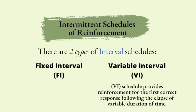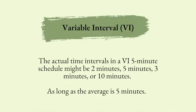A variable interval, or VI, schedule provides reinforcement for the first correct response following the lapse of a variable duration of time. VI schedules may have a less significant post-reinforcement pause, or none at all. When thinking about post-reinforcement pause, think of fixed interval schedules. For example, a VI five-minute schedule provides reinforcement after an average of five minutes have lapsed followed by a correct response — the actual intervals might be two minutes, five minutes, three minutes, or even ten minutes, as long as the average is five minutes. An example in real life is a pop quiz: a teacher will not tell students when it will happen, so they are expected to pay attention and study throughout the week, month, or even semester.